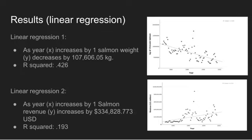The results of the linear regression. Linear regression 1 found that there was a negative relationship between year and kilograms of salmon caught by commercial fishermen. As year (X) increases by 1, salmon weight (Y) decreases by 107,606.05 kilograms. The R squared, which is the percent variation of all values to this line, was 0.426 or 42.6 percent variation.